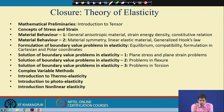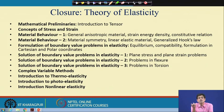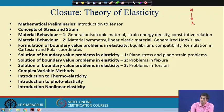In Material Behavior 2, we discussed material symmetry and learned what orthotropic material, transverse isotropic material, and cubic material are. We also learned how to generalize from 81 material constants down to just 2 material constants for an isotropic material.